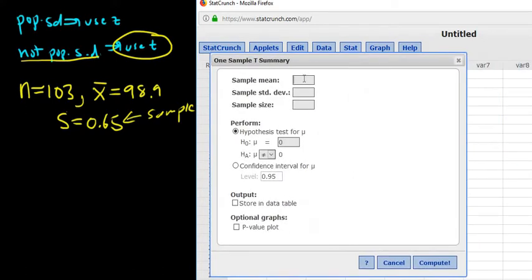Now we just type everything in. The sample mean is 98.9. The sample standard deviation is 0.65. And the sample size is 103. This is not a hypothesis test, it's a confidence interval. So we'll click that.